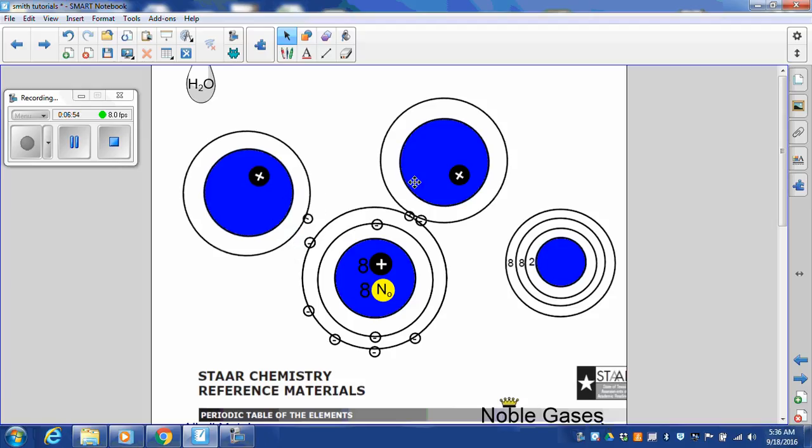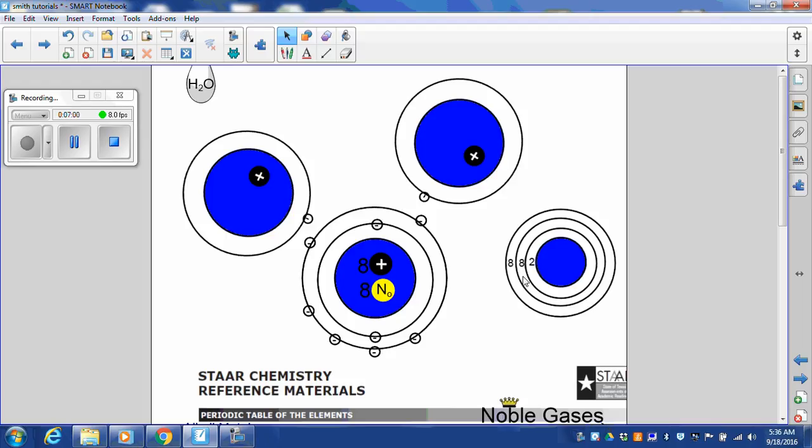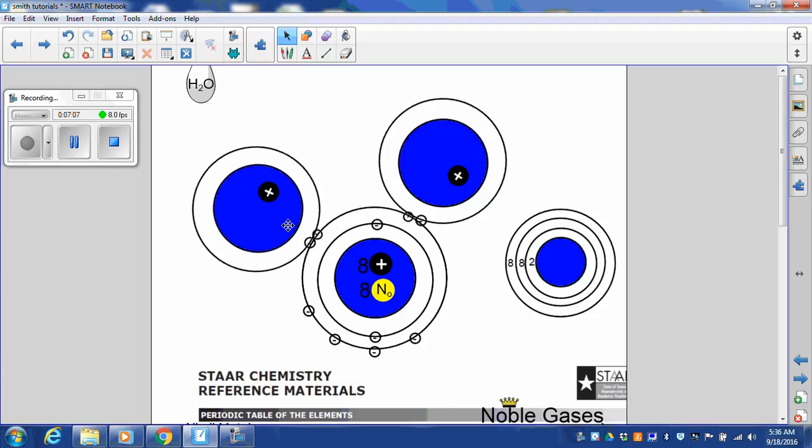Without hydrogen, remember oxygen has six. If it had eight, it would be full. So it's happy when this one makes seven tags on. This one makes eight tags on. Now it feels like a noble gas with its outside shell full.